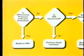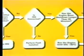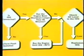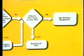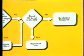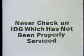Checking is an extremely important phase of IDG servicing. Checking procedures include: one, observing the scavenge filter differential pressure indicator; two, making sure the IDG is connected; and three, performing a low oil level check within 90 minutes of engine shutdown. Do not perform these checking procedures on a newly installed or replacement IDG which has not been properly serviced.